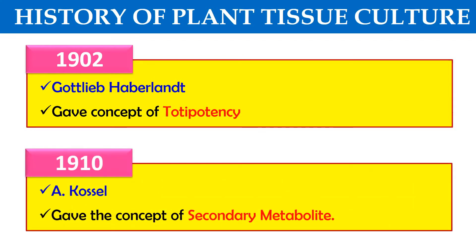In 1910, the concept of secondary metabolites was given by A. Cozelle. Secondary metabolites are products which are generally secreted by plants in order to defend them — they are not required for growth but are produced to protect the plant from predators. These secondary metabolites have industrial importance, for example in the perfume industry.